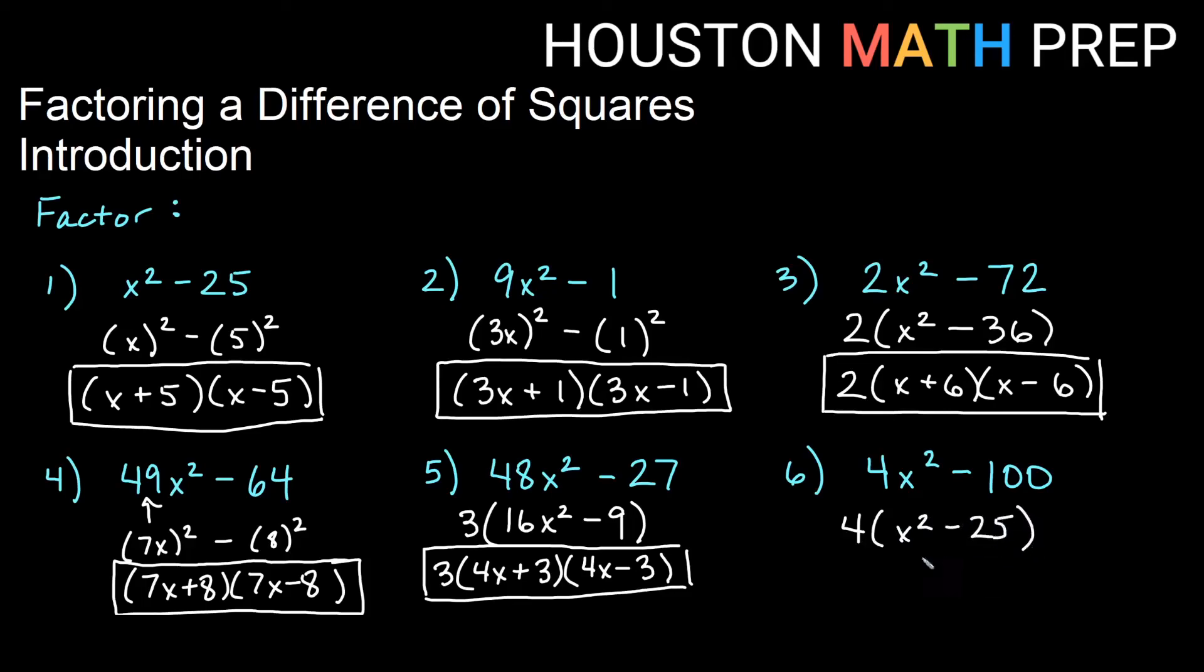And then going from there, we should note that this is x times x. We will get an x in each factor. This is 5 times 5, so we will get a 5 in each factor. And one of them will have x plus 5, one will have x minus 5. Be careful with your greatest common factors. Don't forget those.